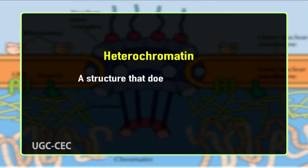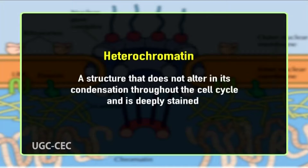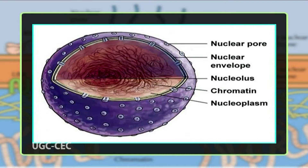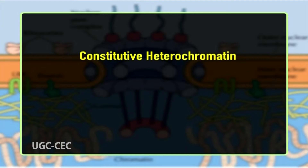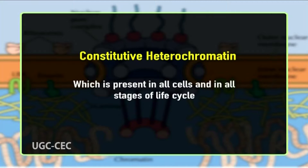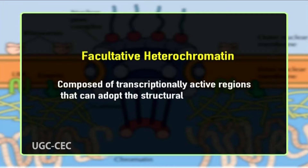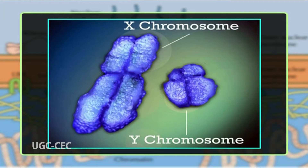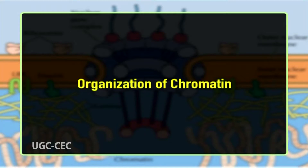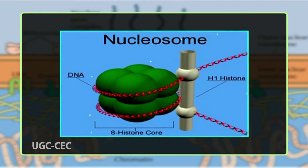Chromatin is divided into euchromatin and heterochromatin. Heterochromatin does not alter its condensation throughout the cell cycle and is deeply stained, whereas euchromatin is decondensed during interphase. Heterochromatin is localized principally on the periphery of the nucleus, and euchromatin in the interior. Heterochromatin is further of two types: constitutive heterochromatin, present in all cells at all stages of the life cycle, containing few genes and formed principally of repetitive sequences at centromeres and telomeres; and facultative heterochromatin, composed of transcriptionally active regions that can adopt heterochromatin characteristics, such as the inactive X chromosome of mammals.